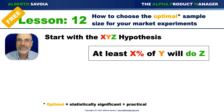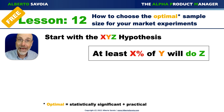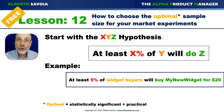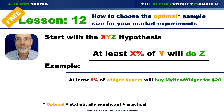The format of the XYZ hypothesis is: at least X percent of Y will do Z, where Y is your target market, Z is what you expect or hope your target market to do — buy your product or sign up for your service — and X percent is the percentage of that target market you need to capture for your idea to be viable and worth pursuing. For example, let's assume you've come up with a new widget called My New Widget, and your hypothesis is: at least 5% of widget buyers will buy My New Widget for $20.